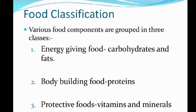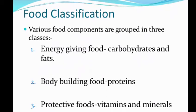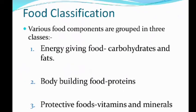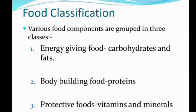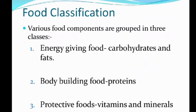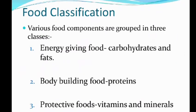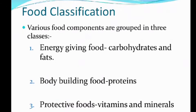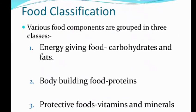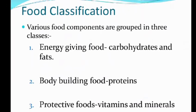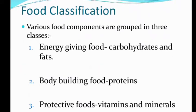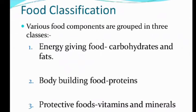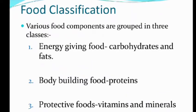Various food components are grouped into three classes. First is energy-giving food, second is body-building food, and third is protective foods. Energy-giving foods are rich in carbohydrates and fats. Body-building foods are rich in proteins and help in the growth of our body. Protective foods include vitamins and minerals, which protect our body against various diseases.